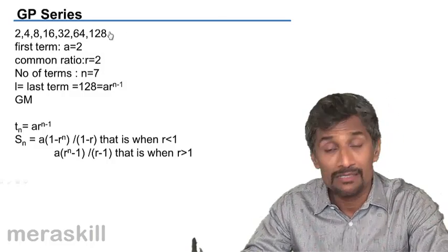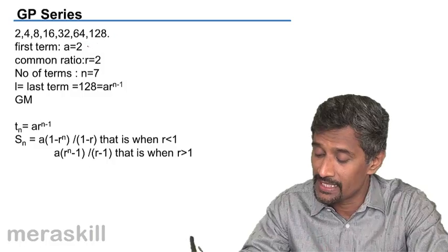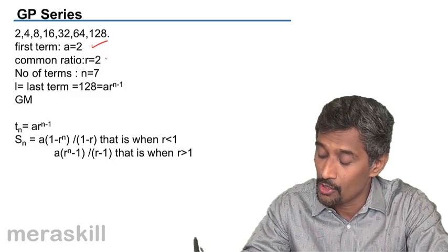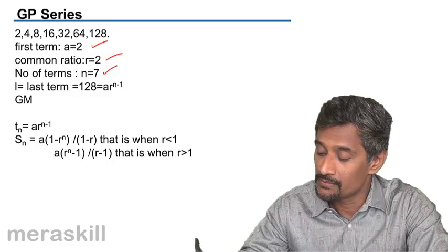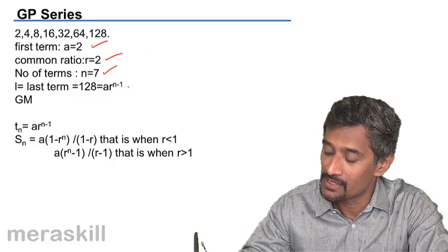We have GP series that we should go into more detail. Here the first term is A, common ratio is R, number of terms is N equals 7, and the last term is 128.